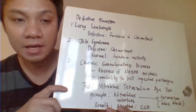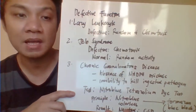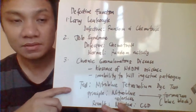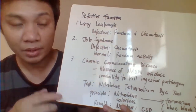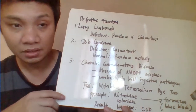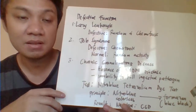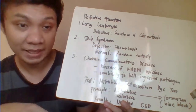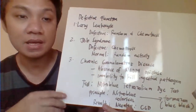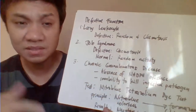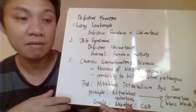Chronic granulomatous disease is characterized by the absence of the enzyme NADPH oxidase, which is the enzyme that kills ingested pathogens. What happens here is that the leukocyte can eventually ingest the pathogen but cannot kill it. Therefore, the patient will have recurrent bacterial infections — it just ingests but could not kill.